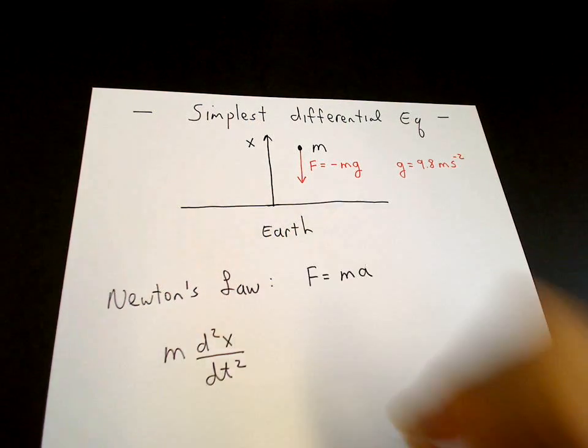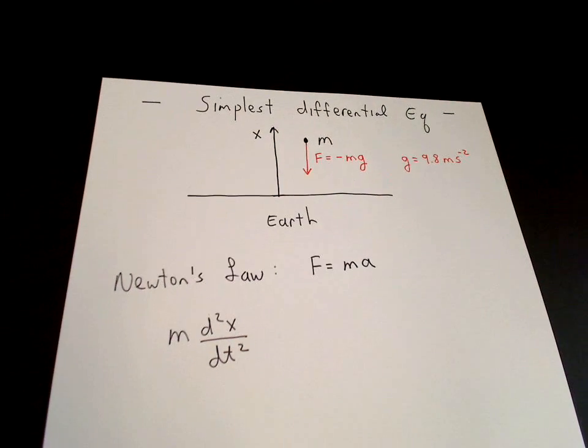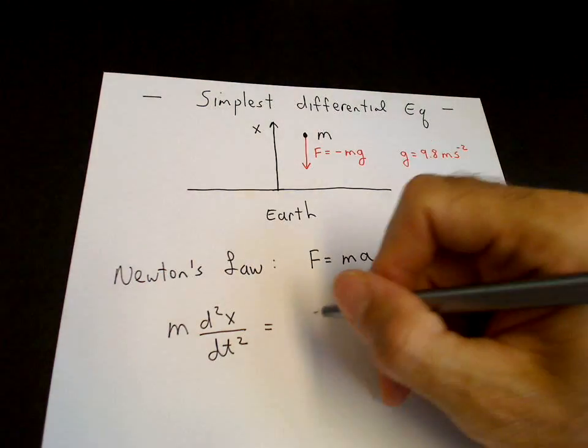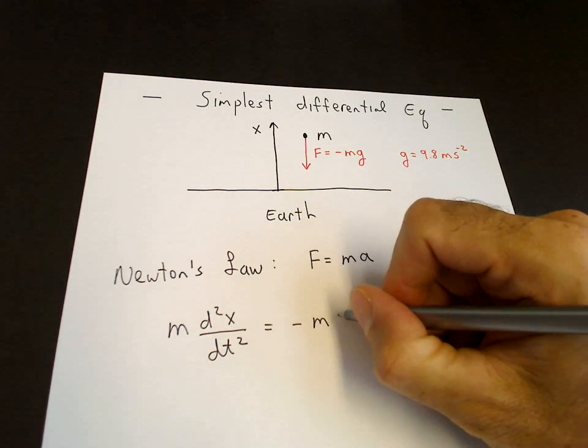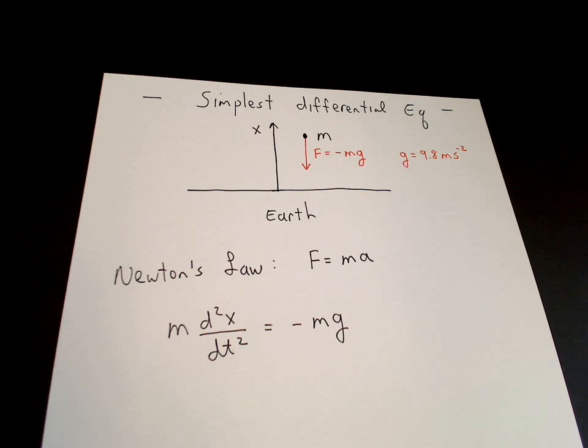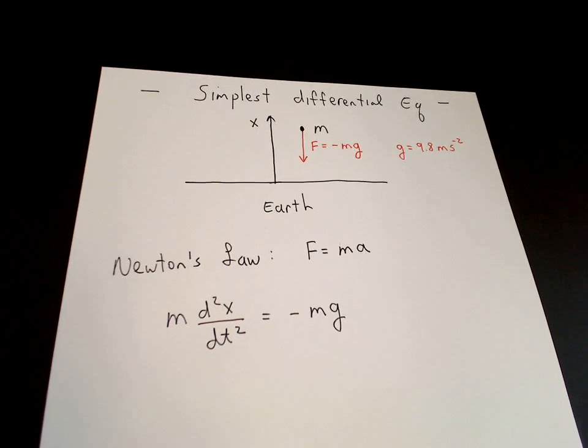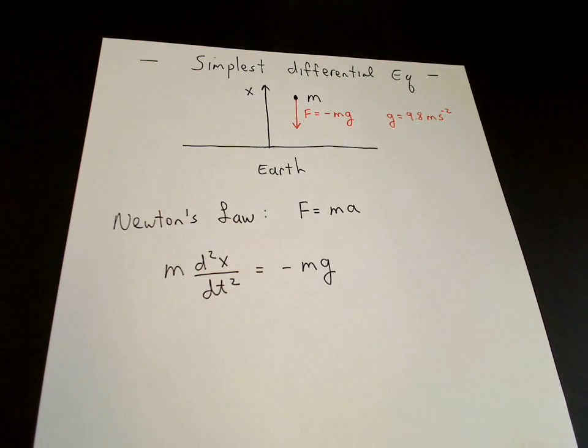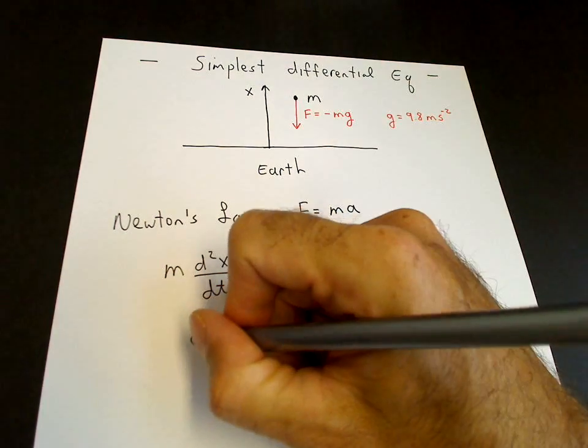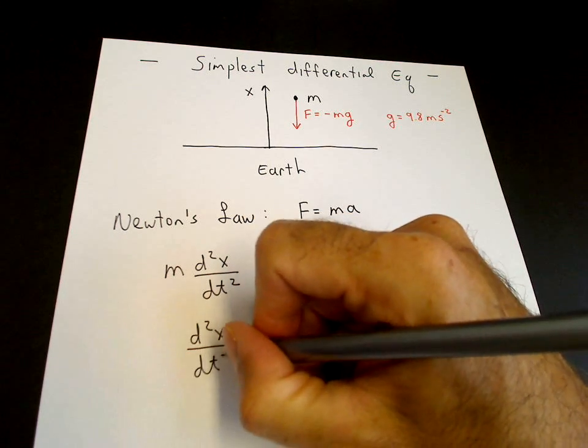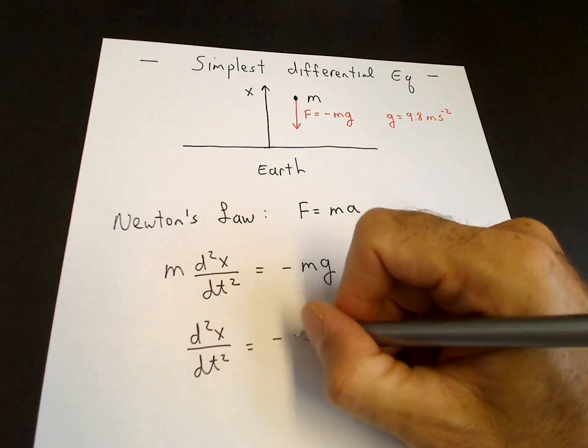So the mass times the acceleration is m d squared x dt squared, and that's equal to the force which is minus m times g if the mass is under constant acceleration due to gravity. So the mass cancels in this equation, which is an important result by itself, and we end up with the differential equation d squared x dt squared equals minus g.